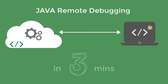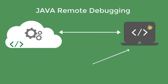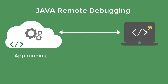First of all, what is remote debugging? It's the act of using a debugger to debug an application that is not running on the same machine as where the code is hosted. You have an application running on the cloud and you want to debug the code of that application from your local computer. This is different from local debugging where the code and the application are running on the same host.